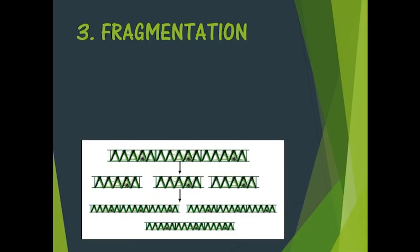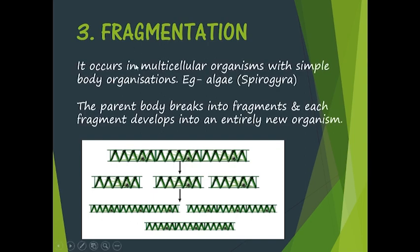The third mode is fragmentation. The name itself tells us that here fragments — small pieces — are formed. As you can see in this diagram, there is a large cell body which breaks down into three fragments, and each of these fragments has the capability to regenerate and form the parent cell again. This process is known as fragmentation. It occurs in multicellular organisms with a simple body organization — for example, algae. The picture shown here is of spirogyra, a type of algae. The parent body breaks into fragments and each fragment develops into an entirely new organism.